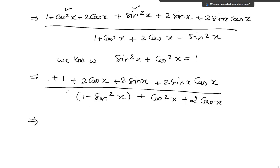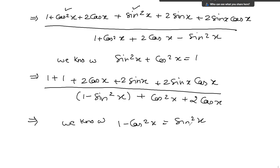Which implies — we know that 1 minus cos squared x equals sin squared x, the same identity. So in the denominator, in place of 1 minus sin squared x, I just put cos squared x.